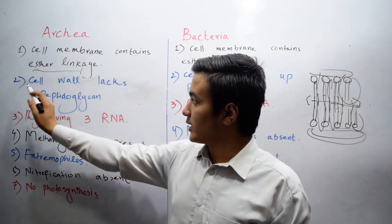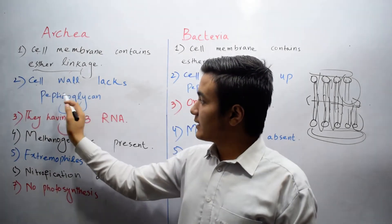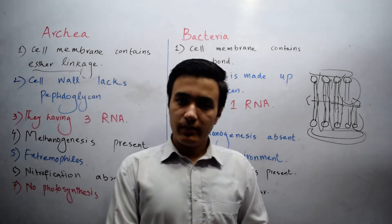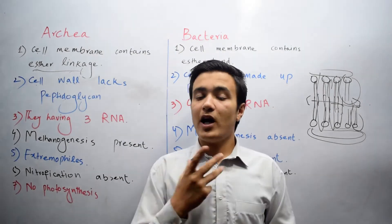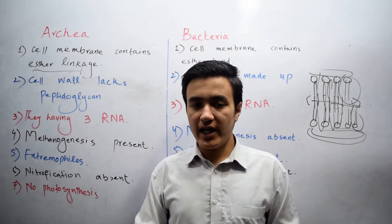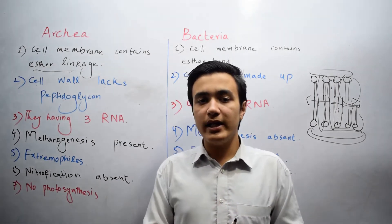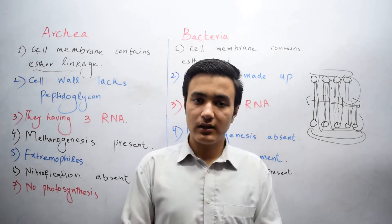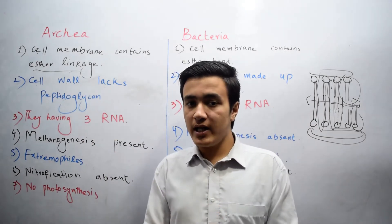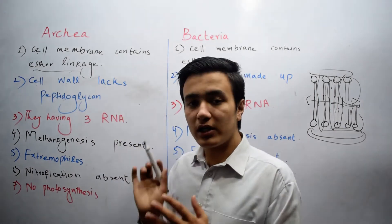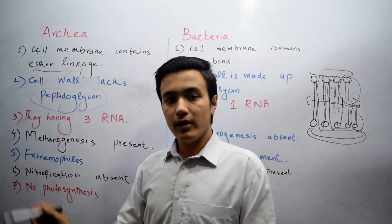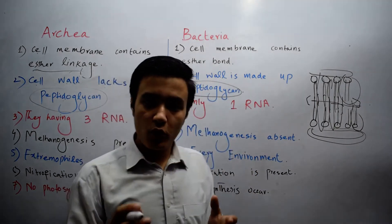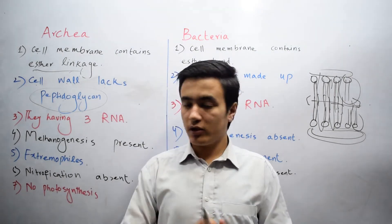The second difference: the cell wall of Archaea lacks peptidoglycan, while in Bacteria the cell wall is made of peptidoglycan. Peptidoglycan is basically the combination of protein and carbohydrates. In Archaea, the cell wall does not contain any protein and carbohydrates, while in Bacteria, peptidoglycan — meaning protein and carbohydrate — is present. That was the second difference.